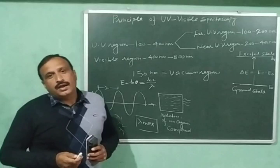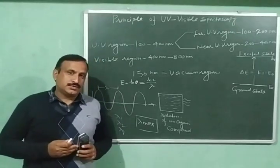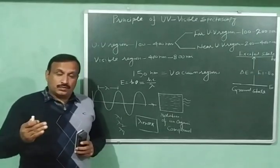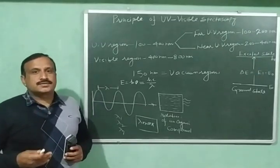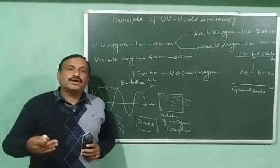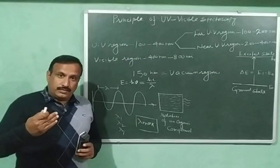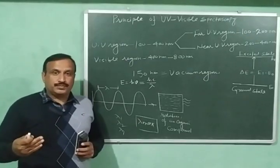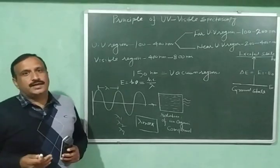This subdivision is very essential due to some practical reasons. Because at 200nm or below 200nm, oxygen starts absorbing the UV radiations, and we will not be able to differentiate whether our organic compound has absorbed the UV radiations or oxygen has absorbed.